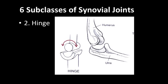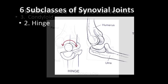Another subclass of a synovial joint is a hinge joint. Hinge joints allow movements in one plane — sort of an opening and closing, or in the elbow, the flexion and extension of the elbow. This is like the hinge on a door.